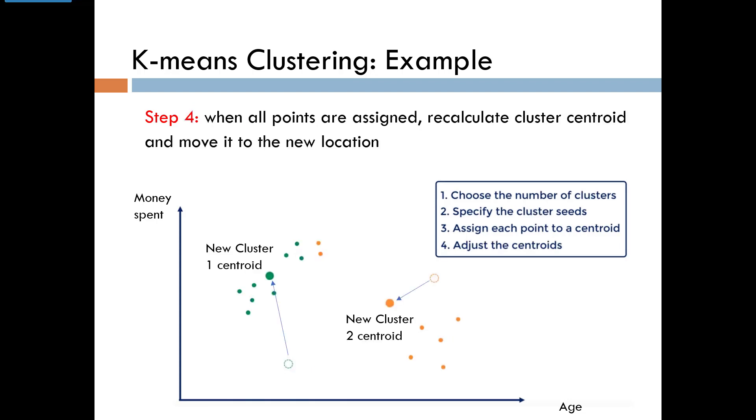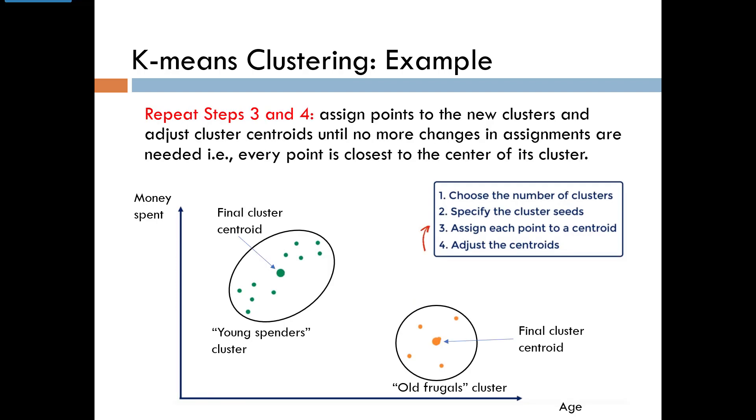When all the data points are assigned, we go to step 4, in which we adjust the centroids. A new centroid for each cluster is calculated based on the points assigned to that cluster. The centroids are moved to their new location. Now we simply repeat steps 3 and 4. Points are assigned to the clusters to which they are closest, and the centroids are adjusted to their new locations. This process continues until no more changes are needed.